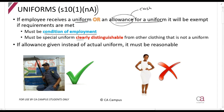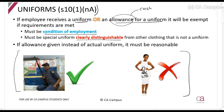It must also be a special uniform which is clearly distinguishable from other clothing that is not a uniform. That's why I'm giving you this example — you can clearly see this is a police officer, but you can't clearly tell what company this other lady works for. There's no logo anywhere. If there was a logo saying 'ABC Limited,' and you could clearly see that everybody working for ABC Limited wears white clothing with the logo on it, then it would be exempt.